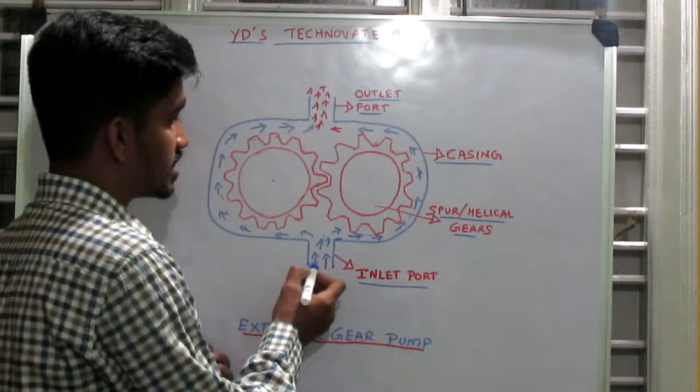into high pressure fluid with the help of these gears. If you want higher pressure, you have to increase the speed of the prime mover, which means increasing the speed of the electric motor. Thank you.